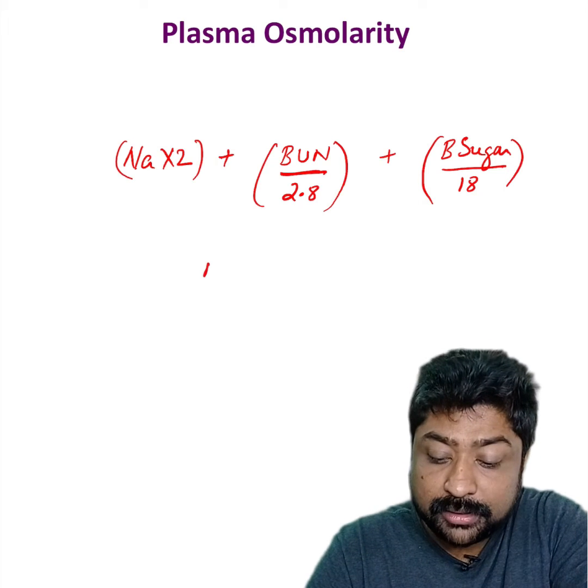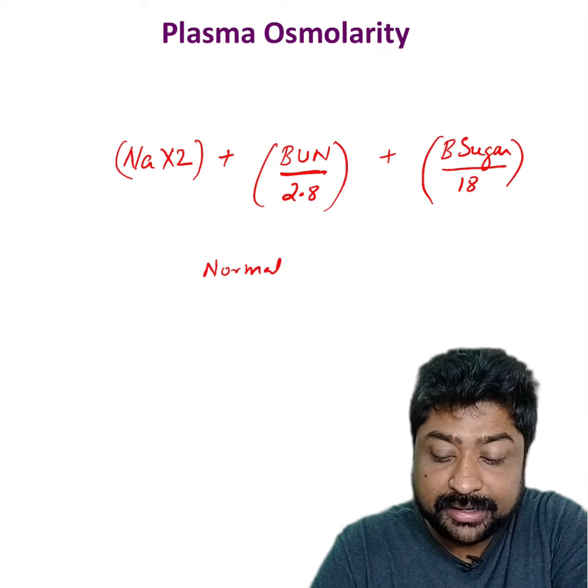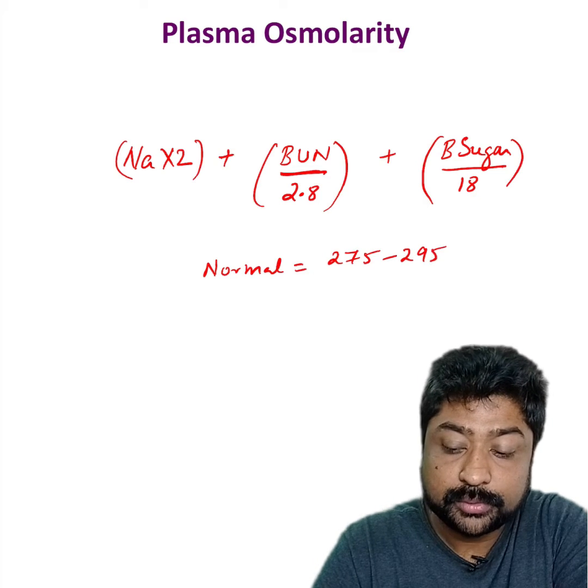Normal plasma osmolarity will be between 275 to 295.